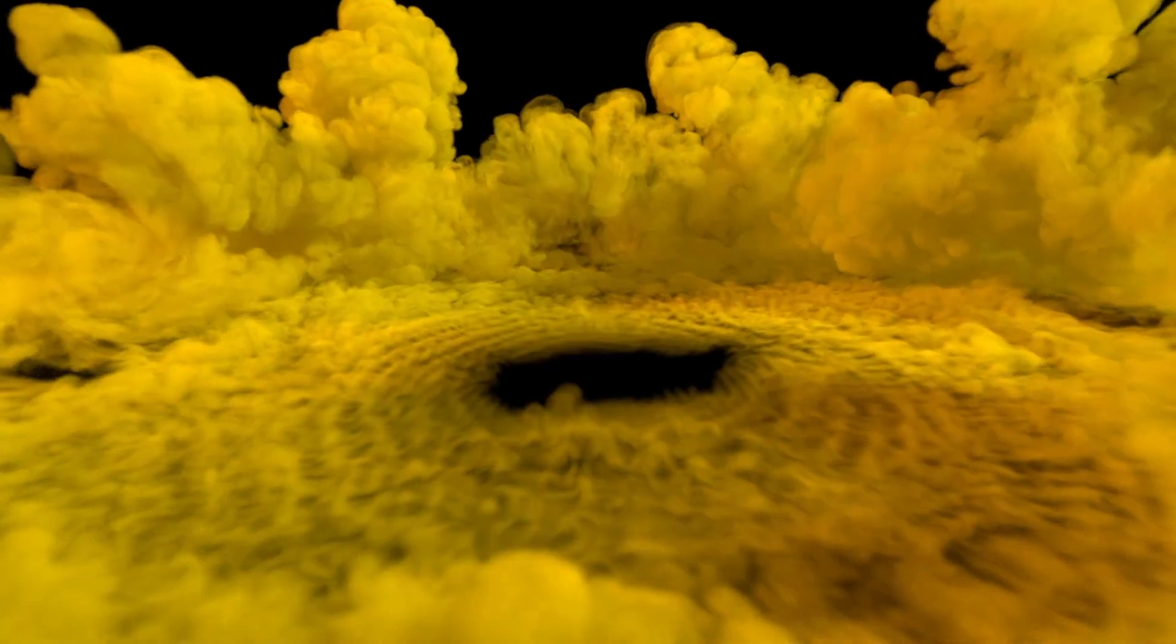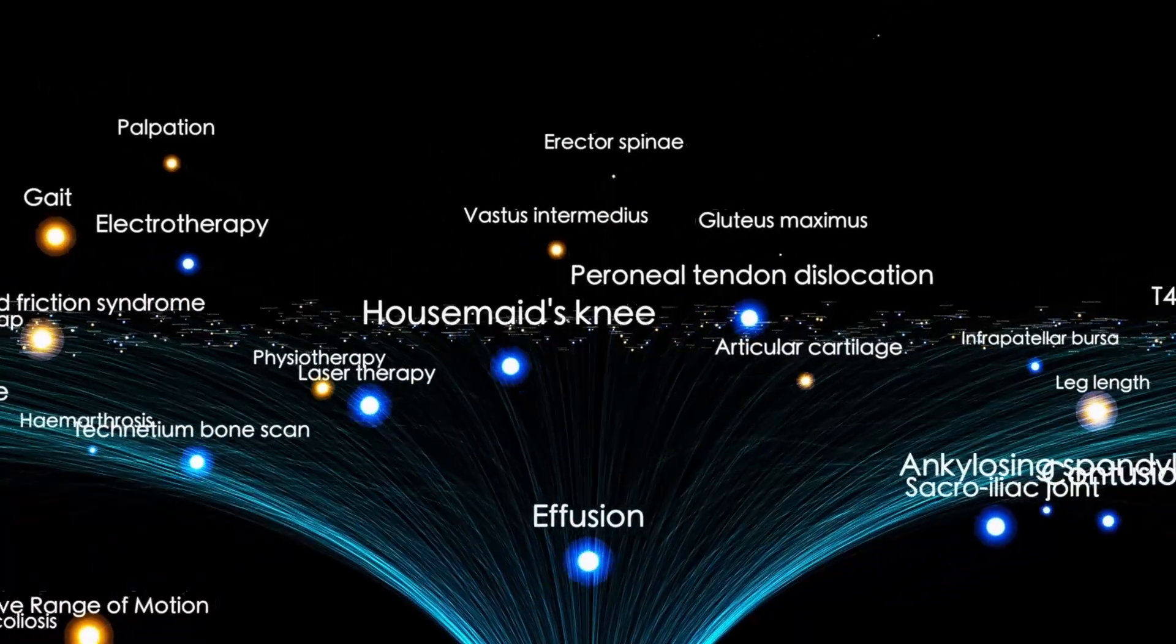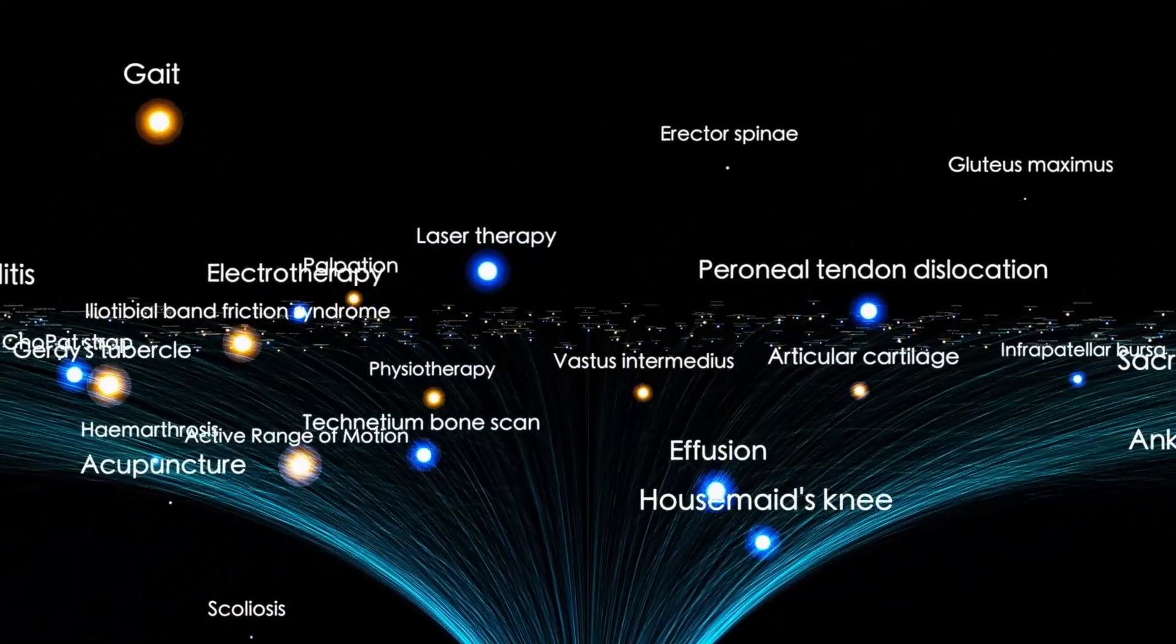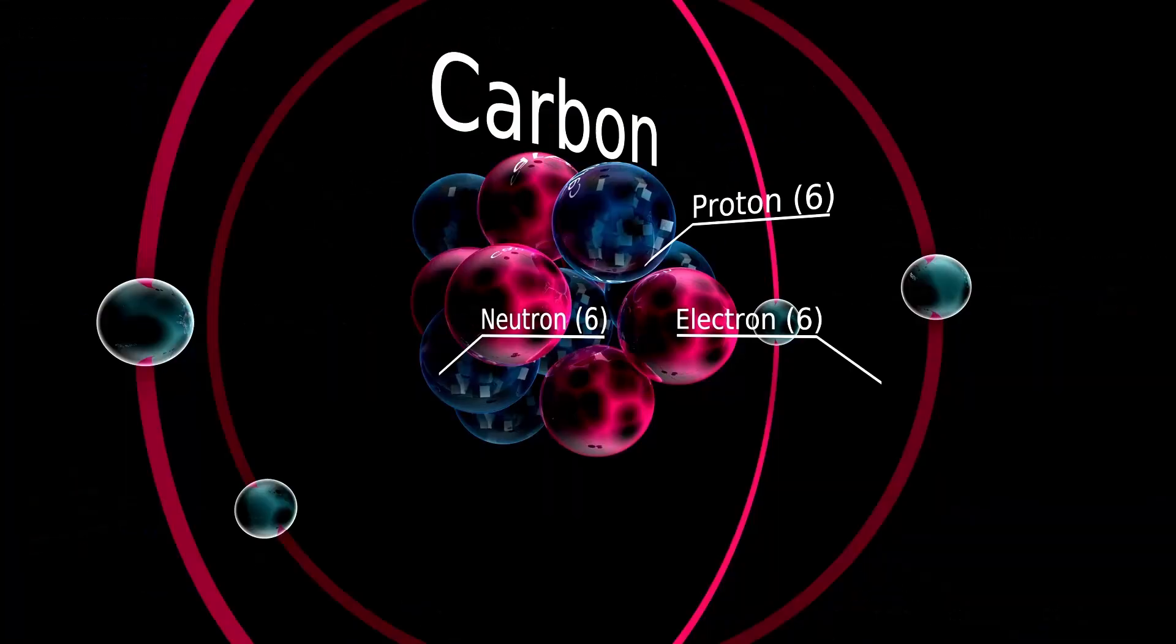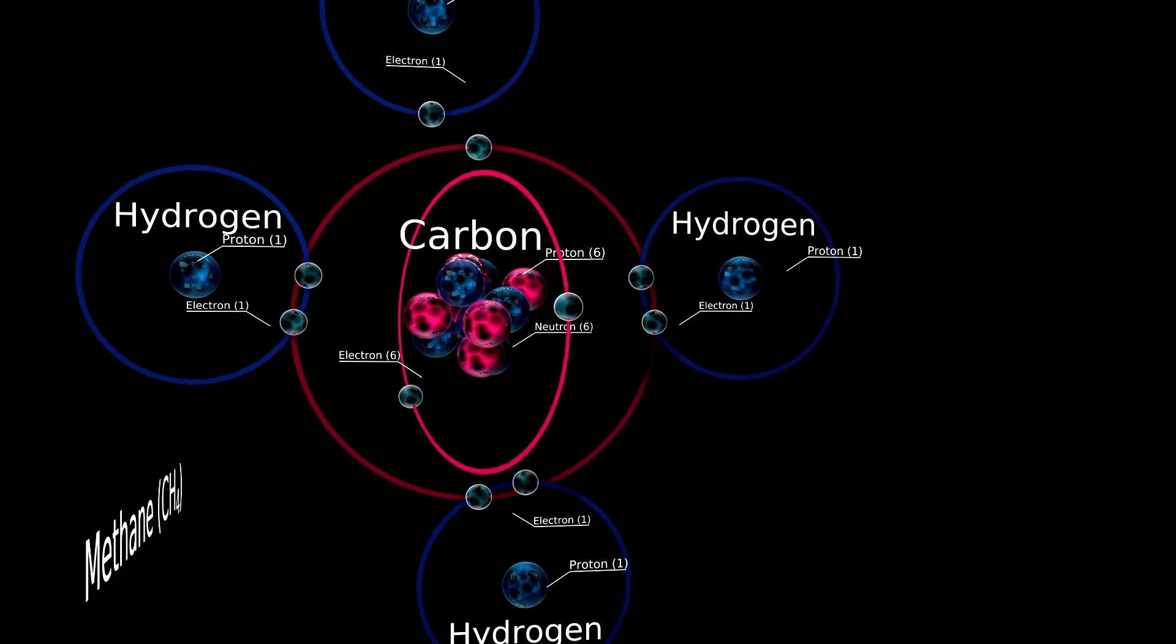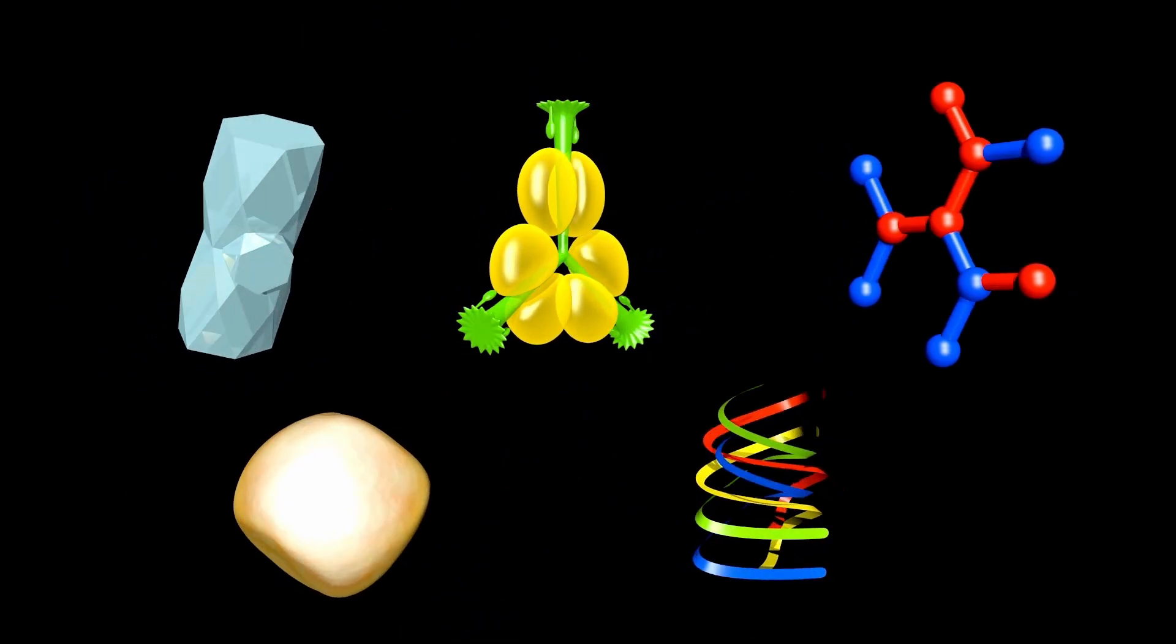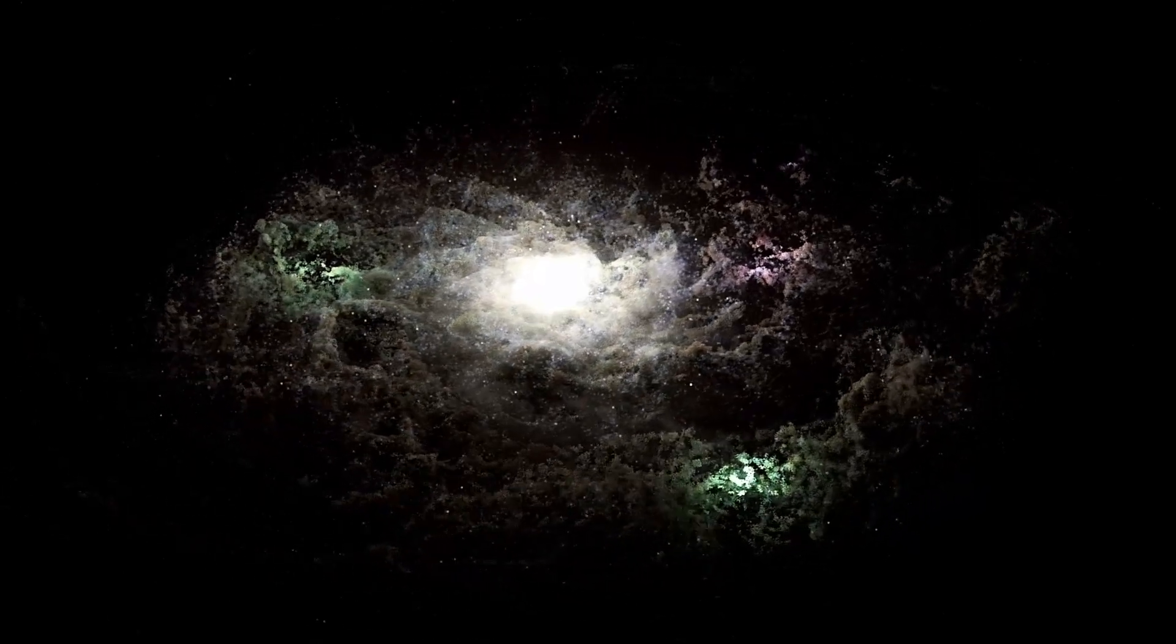And what if Lucy's AI flagged something it couldn't categorize? Sharp edges where there should be curves. Reflective surfaces where everything else is dull and pitted. Mathematical precision screaming artificial design. That's not just a possibility. It's exactly what Lucy's instruments were built to find. They can even detect temperature anomalies, unusual mineral signatures and regular patterns. Anything that smells of structure rather than randomness.